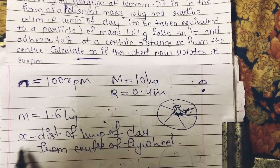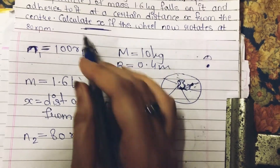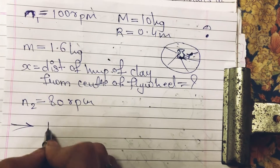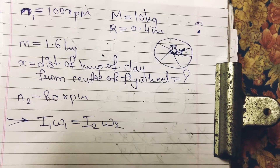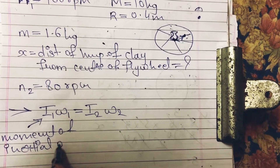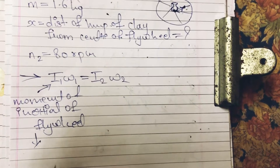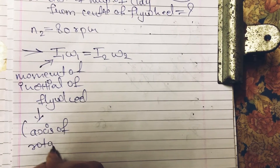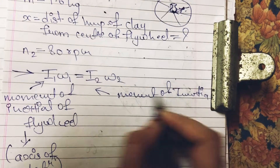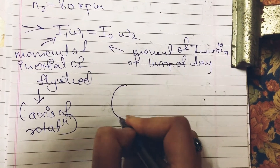Now calculate x if the wheel rotates at a new frequency. Earlier it was 100 revolutions per minute; now it is 80 revolutions per minute. Calculate x — this distance is what we need to find. For this we have the formula I₁ω₁ = I₂ω₂. Here I₁ is the moment of inertia of the flywheel which is rotating, considering the axis of rotation.